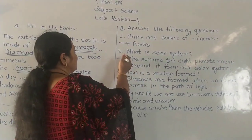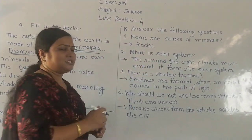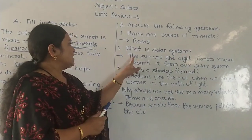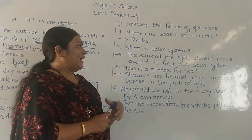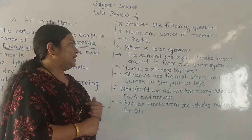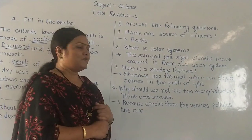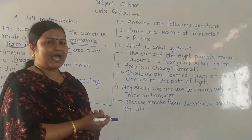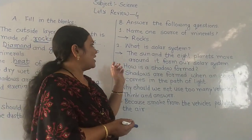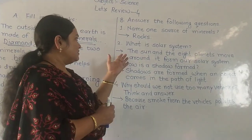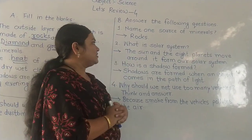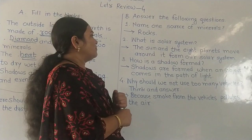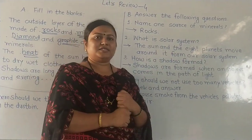Question number 2: what is the solar system? Our answer: the sun and 8 planets that move around it form our solar system.